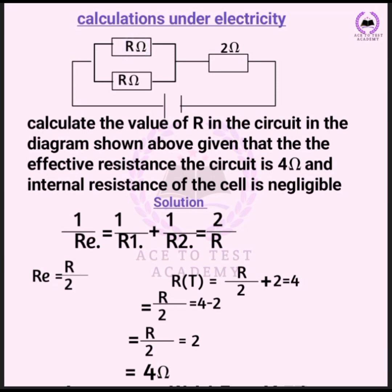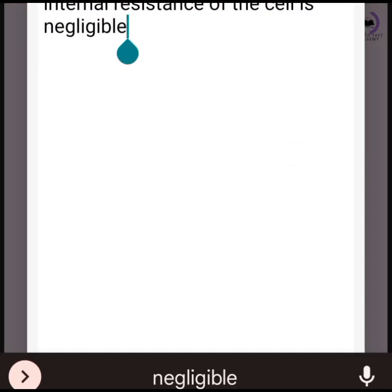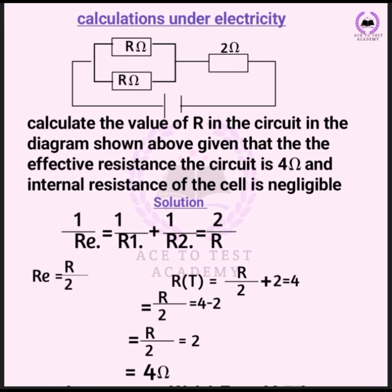Another question: calculate the value of R in the circuit diagram above, given that the effective resistance of the circuit is 4 ohms and the internal resistance of the cell is negligible. Looking at the diagram, one resistor is in parallel — one over R total equals one over R plus one over R, and we use the effective resistance formula.